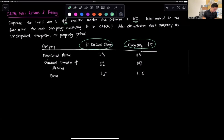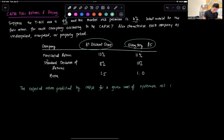To start with, the expected return predicted by CAPM for a given level of systematic risk is given as: expected value E(Ri) equals the risk-free rate Rf plus the beta of a company times expected Rm minus Rf.